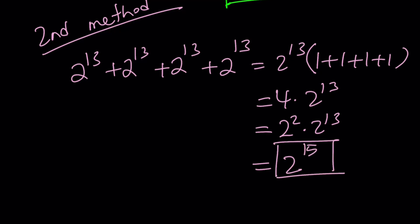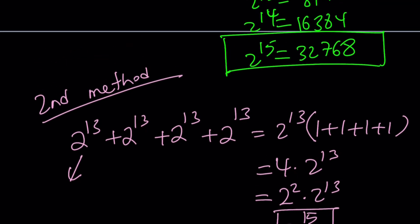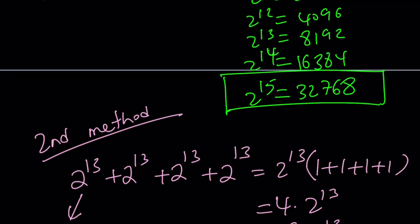Obviously, there's another way to do it — evaluate each of these numbers, add them up, and you'll get the answer. 2 to the power 13, as you know, is 8,192. And if you write it four times and add, you're going to be getting 32,768 as the answer.